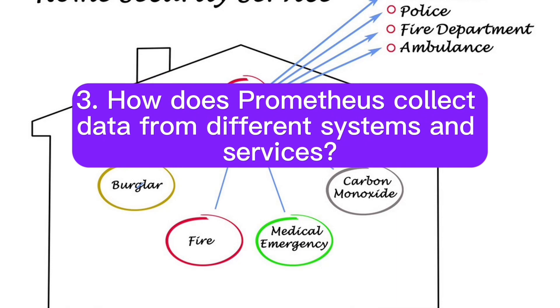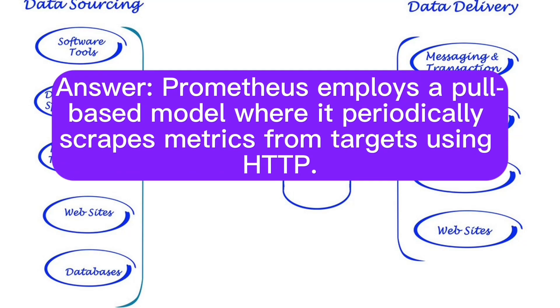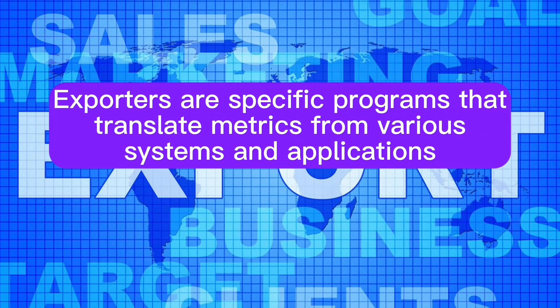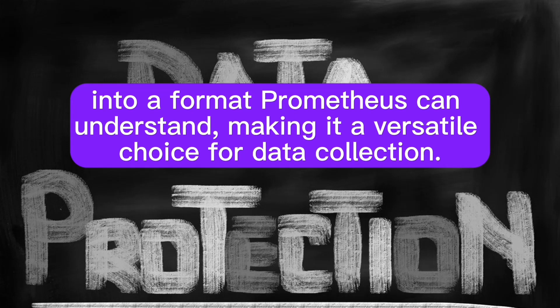How does Prometheus collect data from different systems and services? Prometheus employs a pull-based model where it periodically scrapes metrics from targets using HTTP. Targets can be instrumented directly using Prometheus client libraries or via exporters. Exporters are specific programs that translate metrics from various systems and applications into a format Prometheus can understand, making it a versatile choice for data collection.